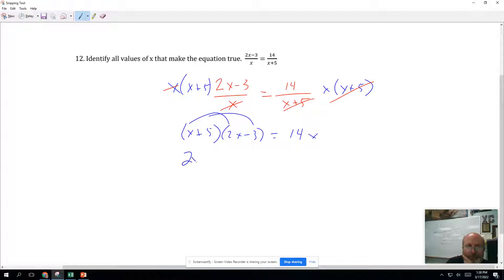Distribute. 2X squared minus 3X. Distribute to 5 plus 10X minus 15. Still equals 14X. That gives me 2X squared plus 7X minus 15.